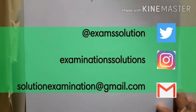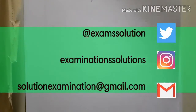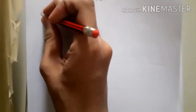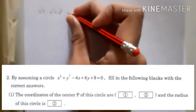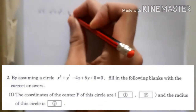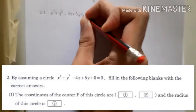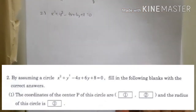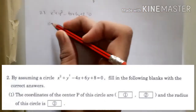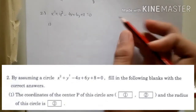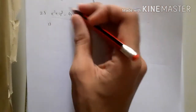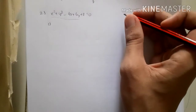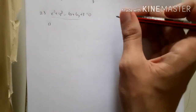Hello everyone, welcome to SensuMath 2014 Part 2. In Part 2, we start by assuming a circle with the equation x² + y² - 4x + 6y + 8 = 0. Number one: find the coordinates of the center of the circle. This equation is in the form of the general circle equation.